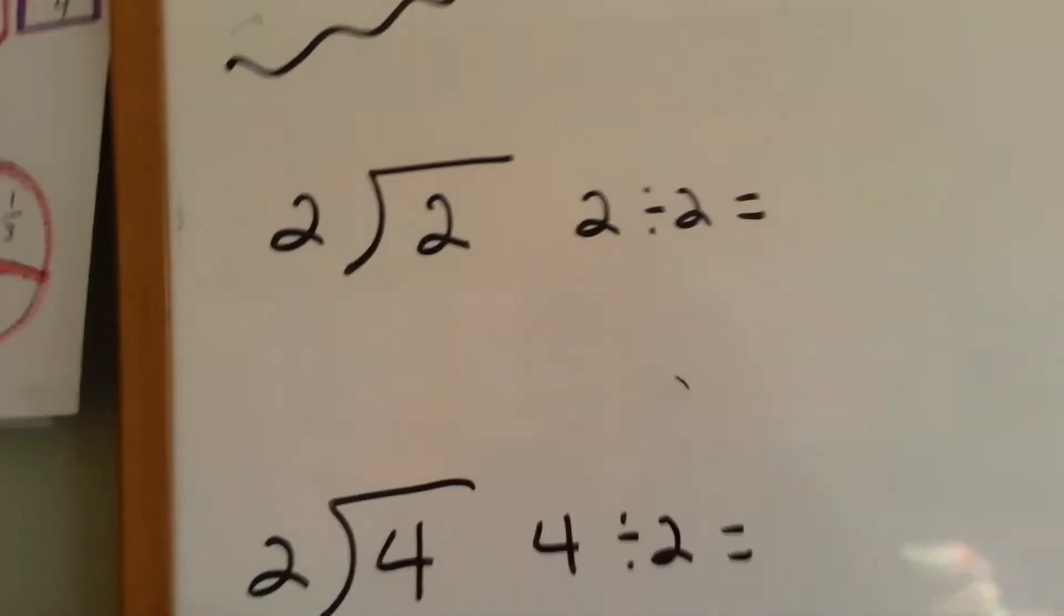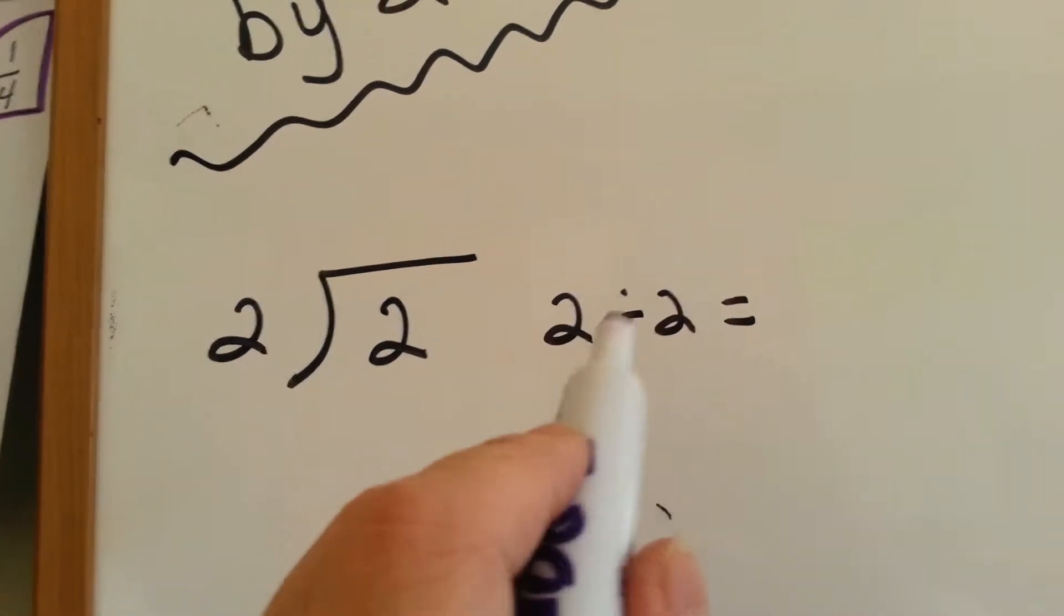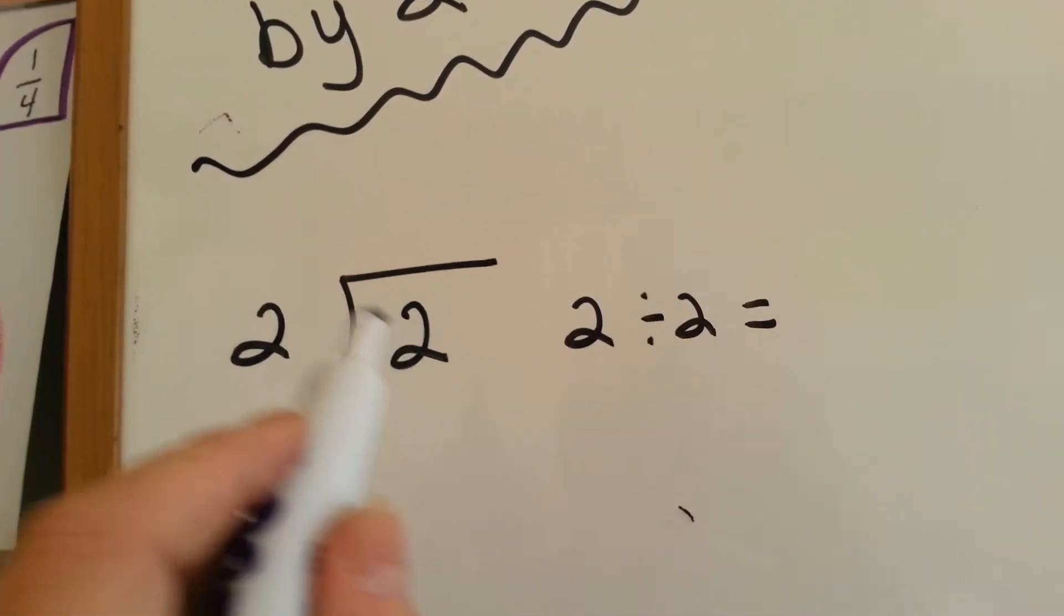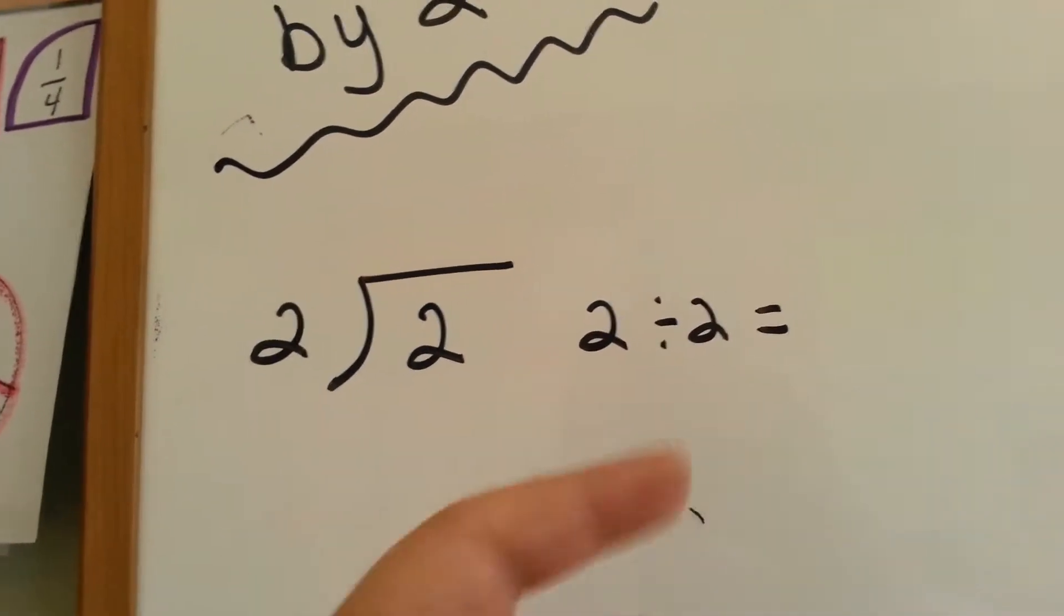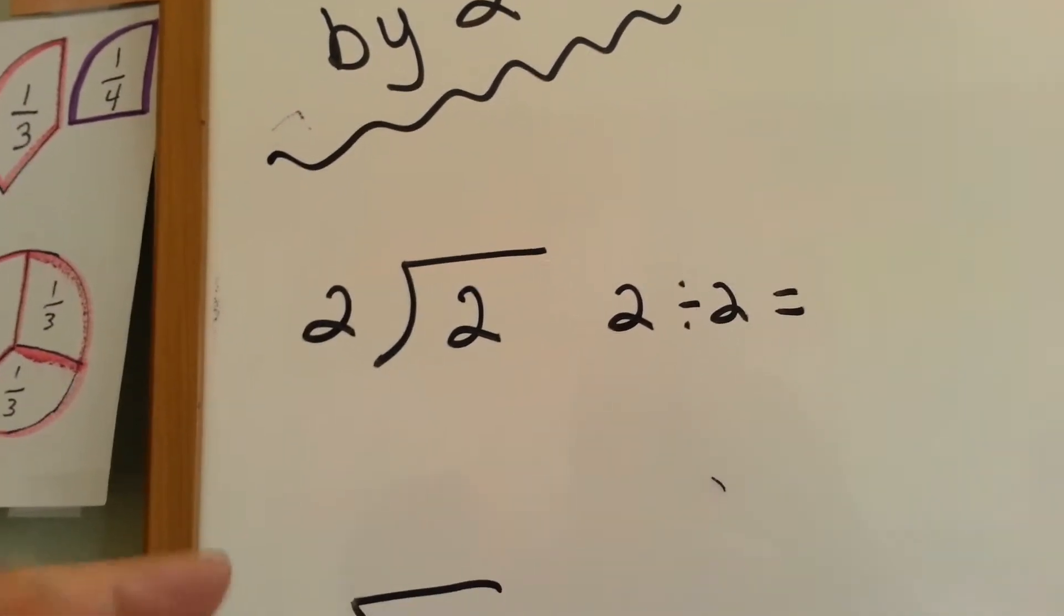So, let's see what we've got here. This is the same as this. 2 divided by 2. The only difference is this one you read going this way, and this one you read going this way.